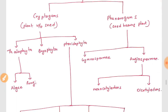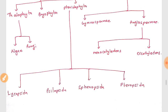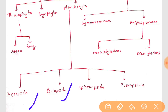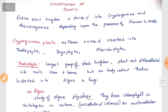Thalophyta has two categories: algae and fungi. Pteridophyta is divided into lycopseida, psylopsida, phenosida, and pteropsida. Angiosperm is divided into monocotyledons and dicotyledons.